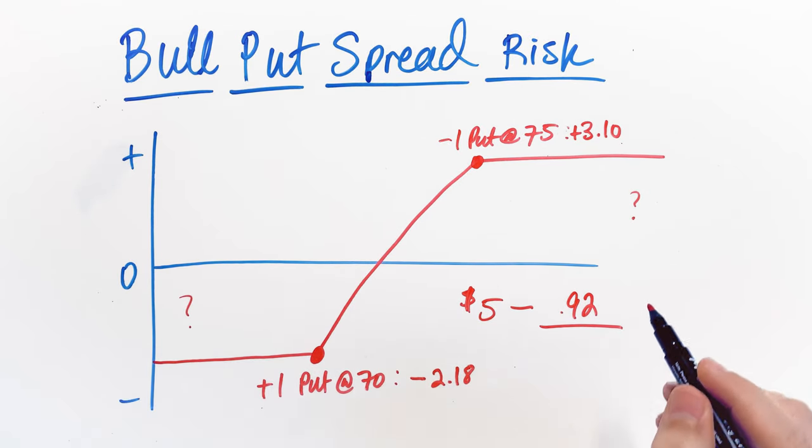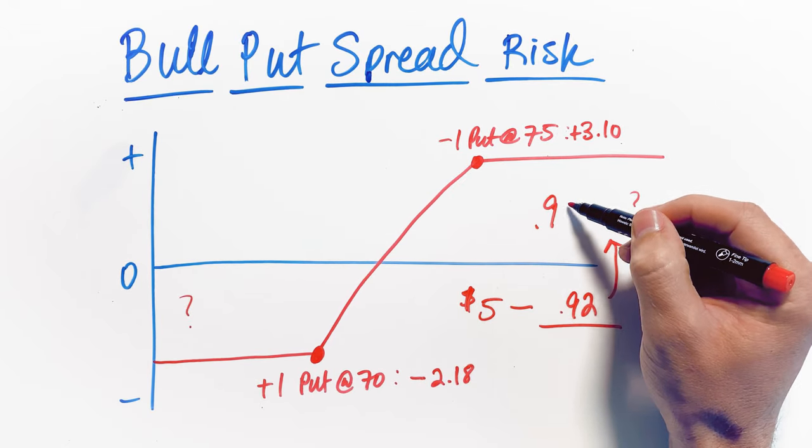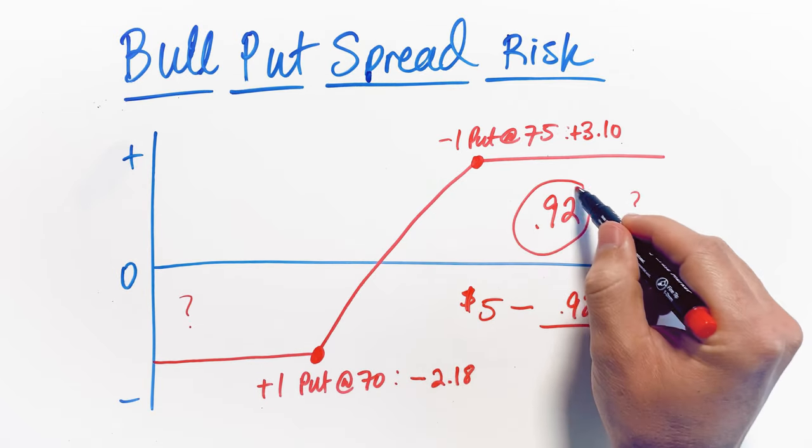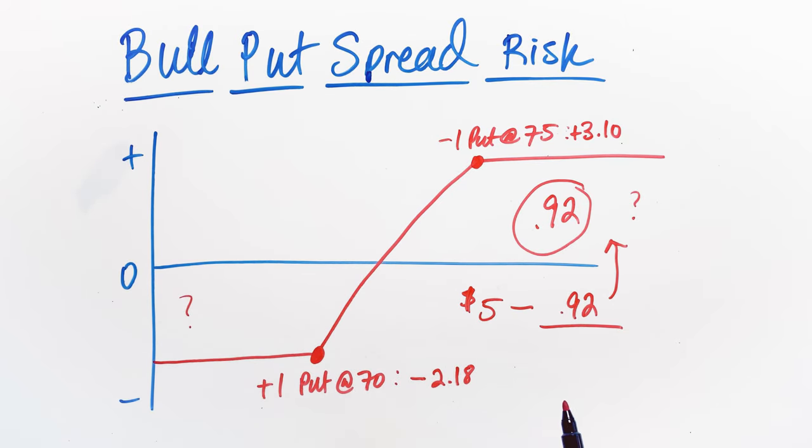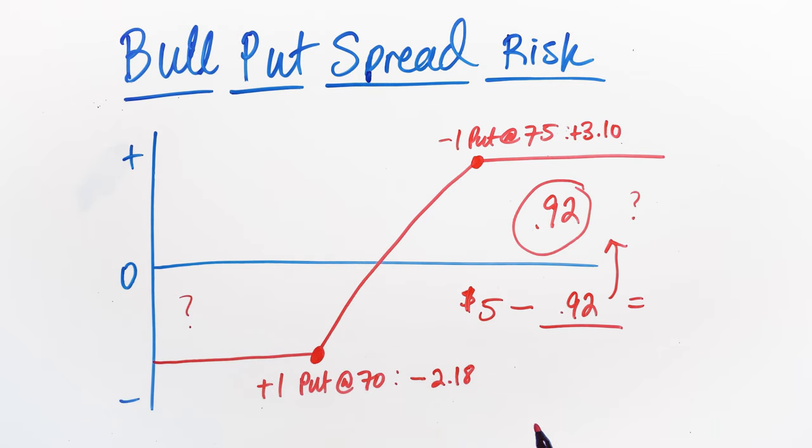That $0.92 premium actually ends up being our max profit as well. It's actually really easy to see that the $0.92 premium we collected here also turns out to be our max potential profit. If the stock closes anywhere above 75, we make the full $0.92 premium. But now we can actually complete our formula here and we can determine how much risk is actually in this position after we factor in the credit that we received on trade entry.